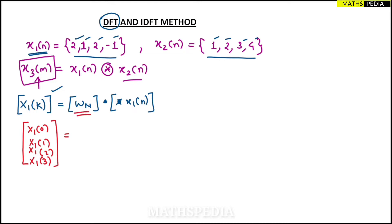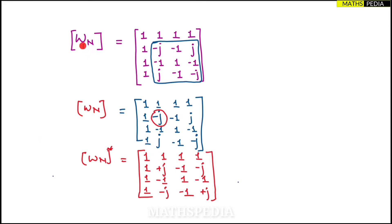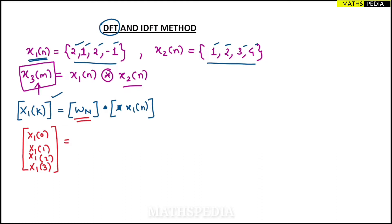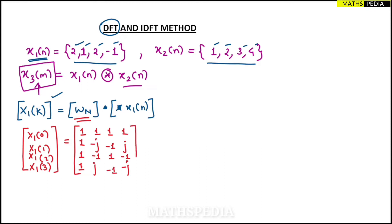This is equal to the W_N matrix, which is the twiddle factor matrix for the four-point DFT. Substituting that matrix: the first row is [1, 1, 1, 1]. The second row has minus j and opposite to that minus j. The third row has plus j opposite to that plus j. Then minus 1, minus 1, minus 1, minus 1, and the center one is plus 1. We multiply this by x1(n) written as a column matrix: [2, 1, 2, −1].